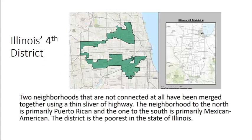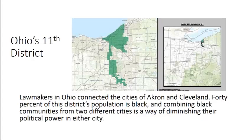The first is Illinois's 4th district. Two neighborhoods that are not connected at all have been merged together using a thin sliver of highway. The neighborhood to the north is primarily Puerto Rican and the one to the south is primarily Mexican-American, so they've taken these two neighborhoods and forced them into a single district — this is the poorest district in the state of Illinois. Another example is Ohio's 11th district, where lawmakers connected the cities of Akron and Cleveland. 40 percent of this district's population is black, and combining the black communities from two different cities was a way of diminishing their political power in either city.